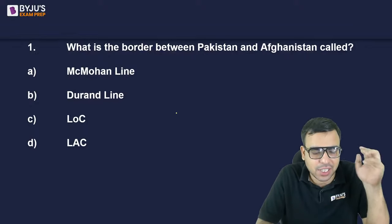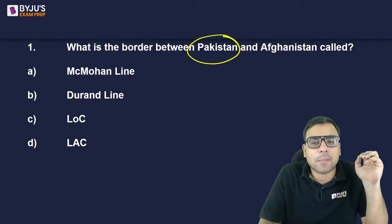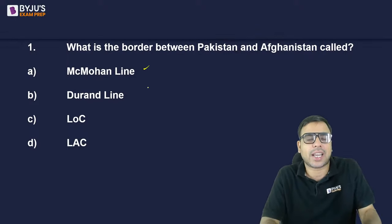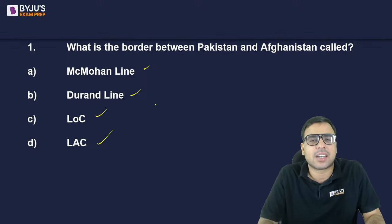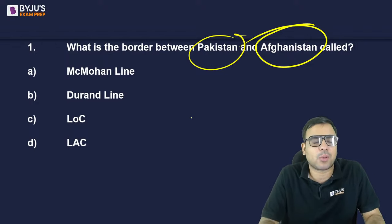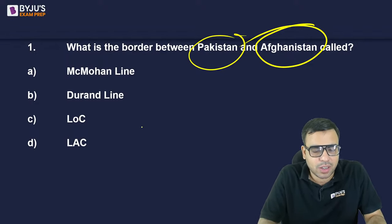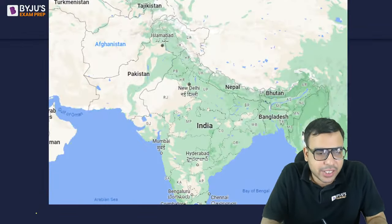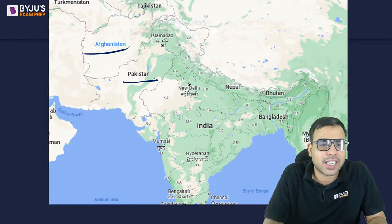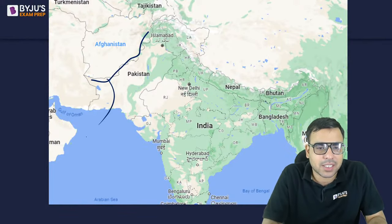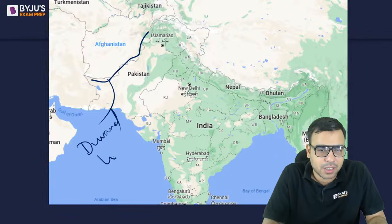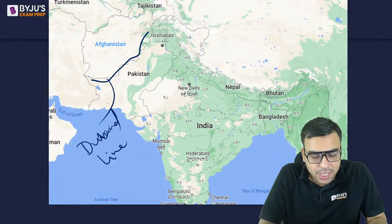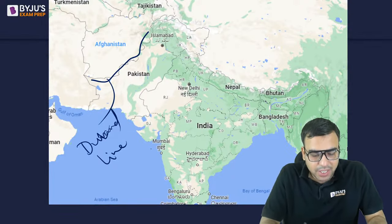The first question: what is the border between Pakistan and Afghanistan called? Options are McMahon Line, Durand Line, LOC, LAC. The right answer is B — Durand Line. Here is Pakistan, here is Afghanistan, this border is called the Durand Line.